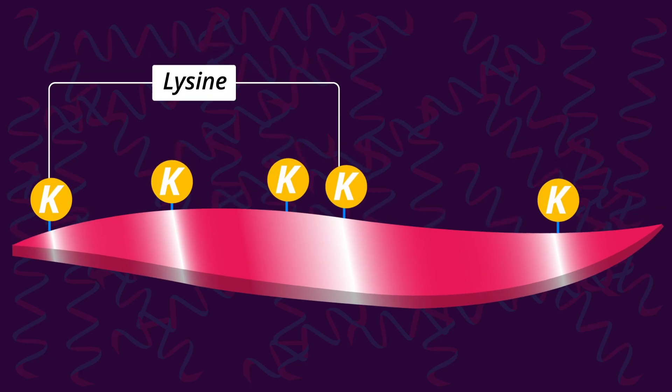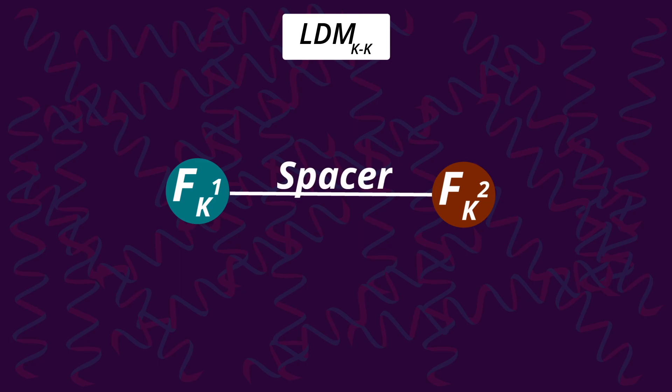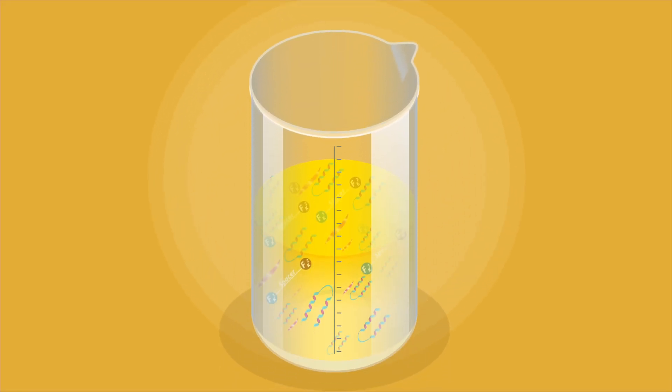To begin with, the scientists designed a custom reagent composed of segments called FK1 and FK2, which were separated by a spacer. This reagent was then mixed with a solution containing the target protein.